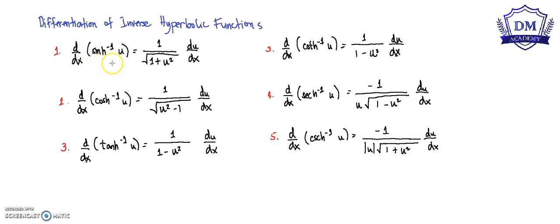The derivative of the inverse hyperbolic sine of u is equal to 1 all over the square root of 1 plus u squared, times the derivative of u with respect to x.